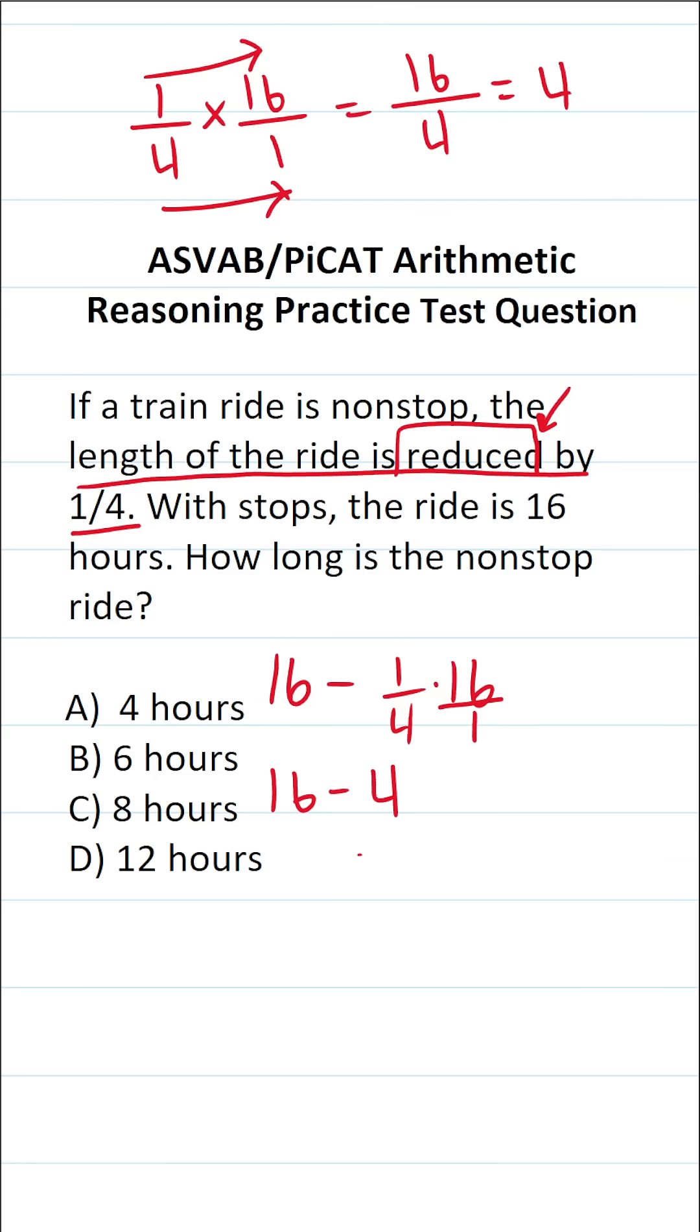This becomes 16 minus 4. 16 minus 4 is 12. So how long is the nonstop ride? It's going to be 12 hours, D. Again, if you were to simply just do 16 times one-fourth, this says the length of the ride is one-fourth of the ride with stops, which is not the phrasing that we have in this question.